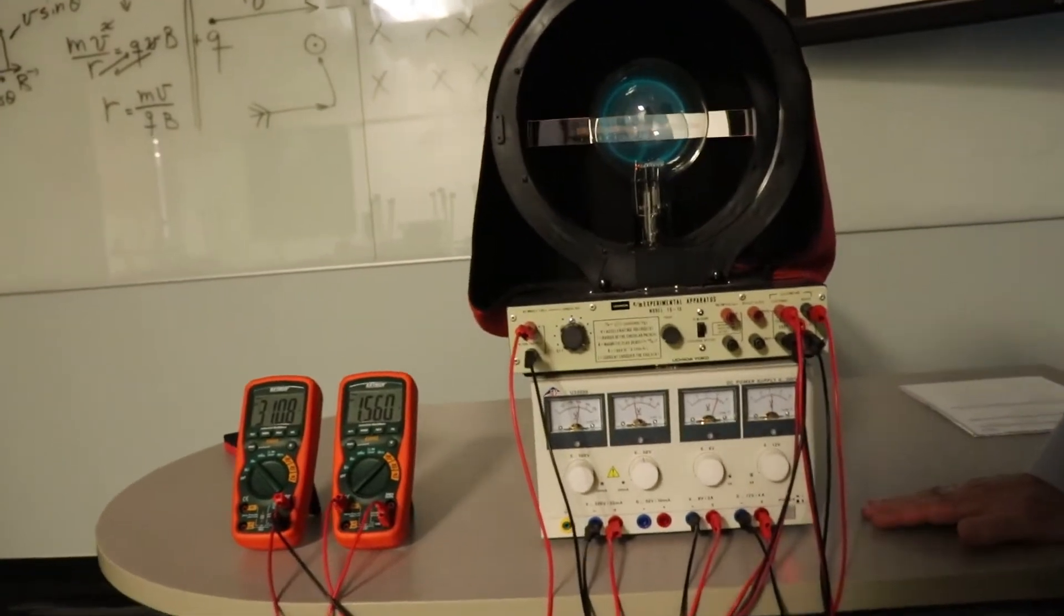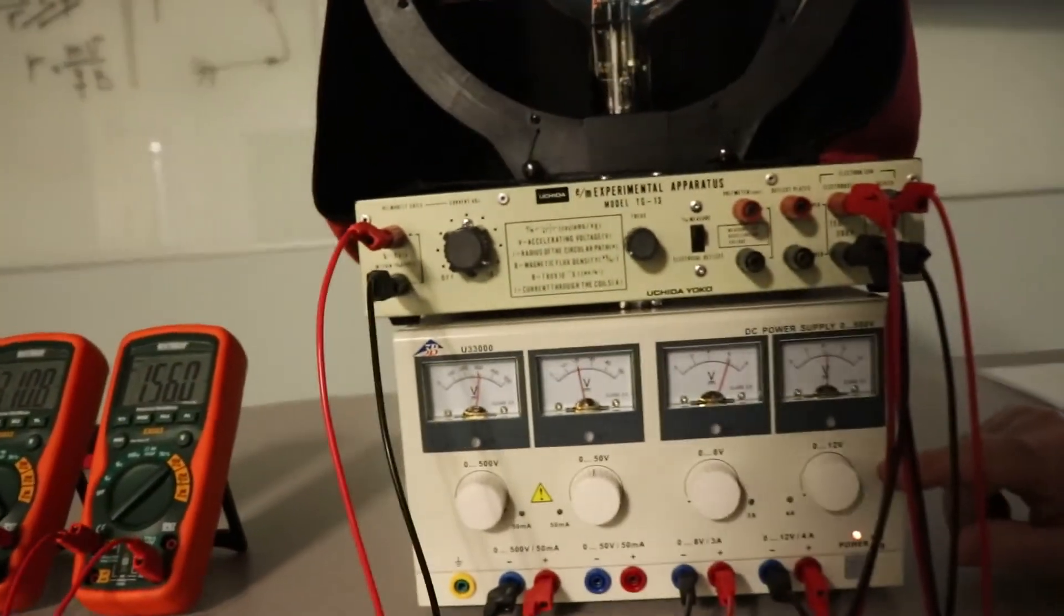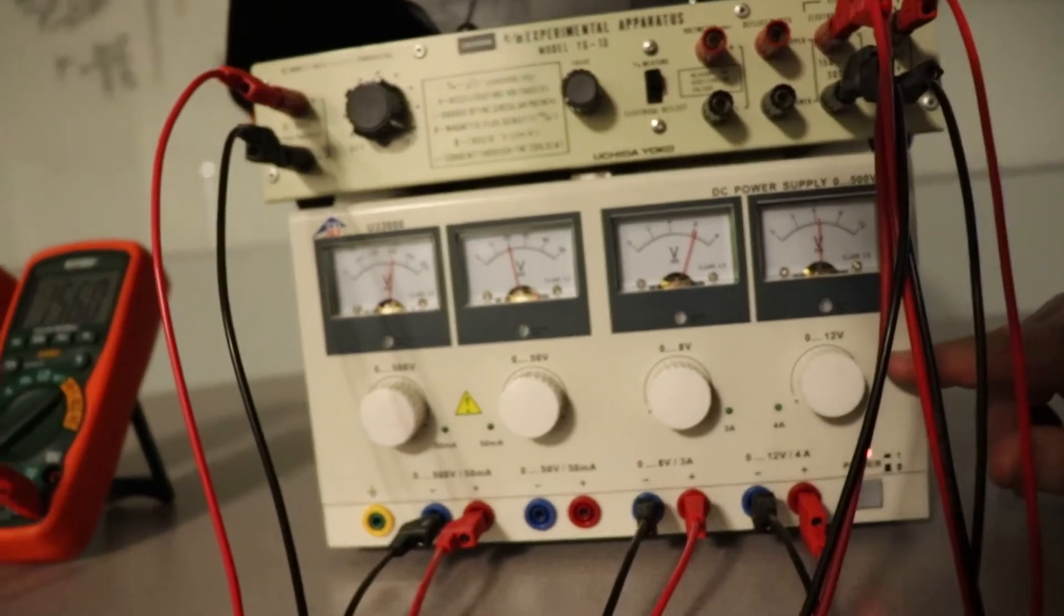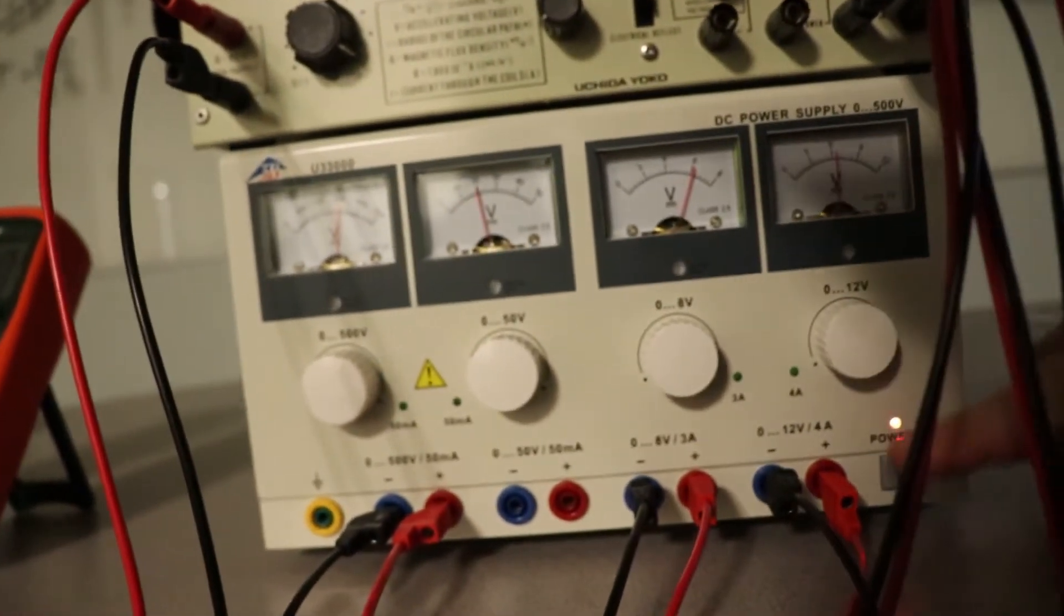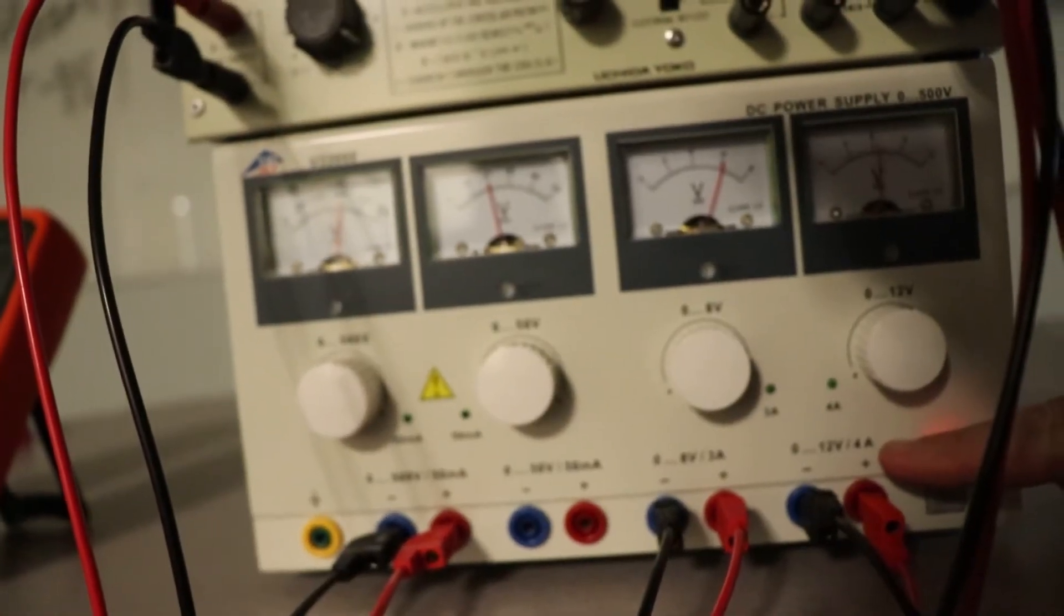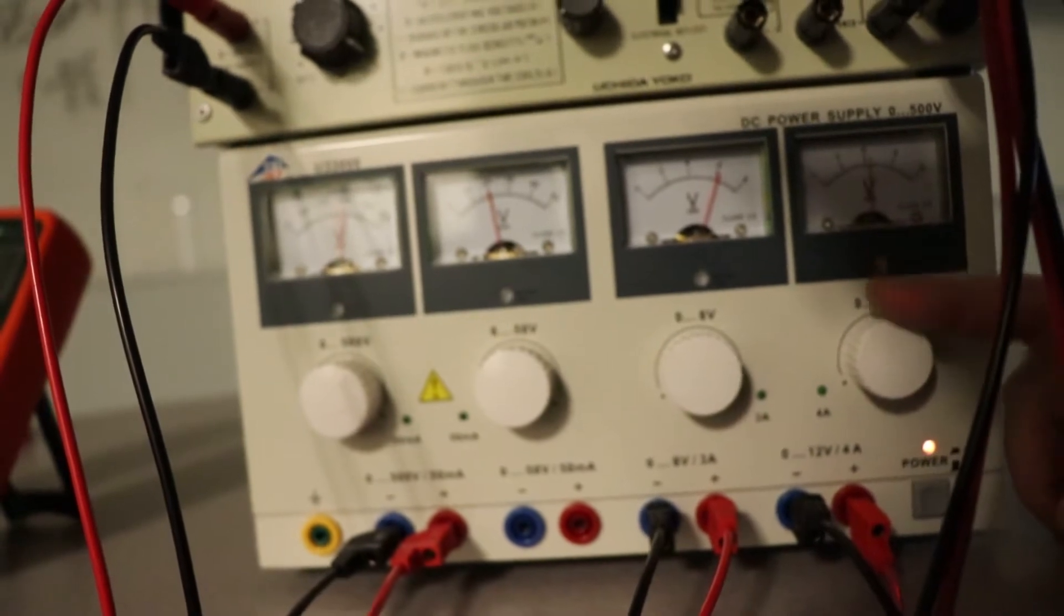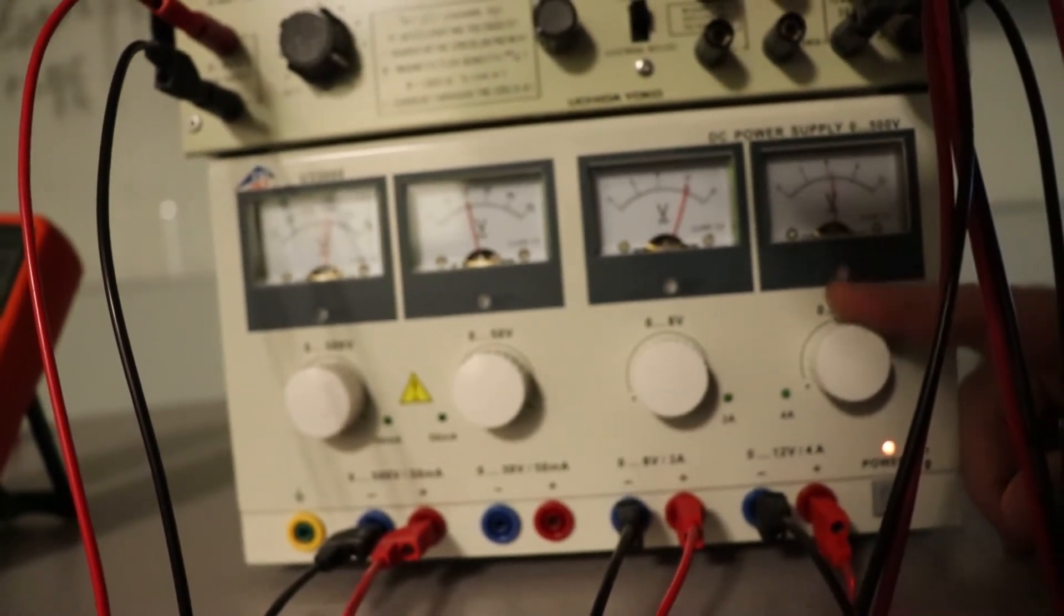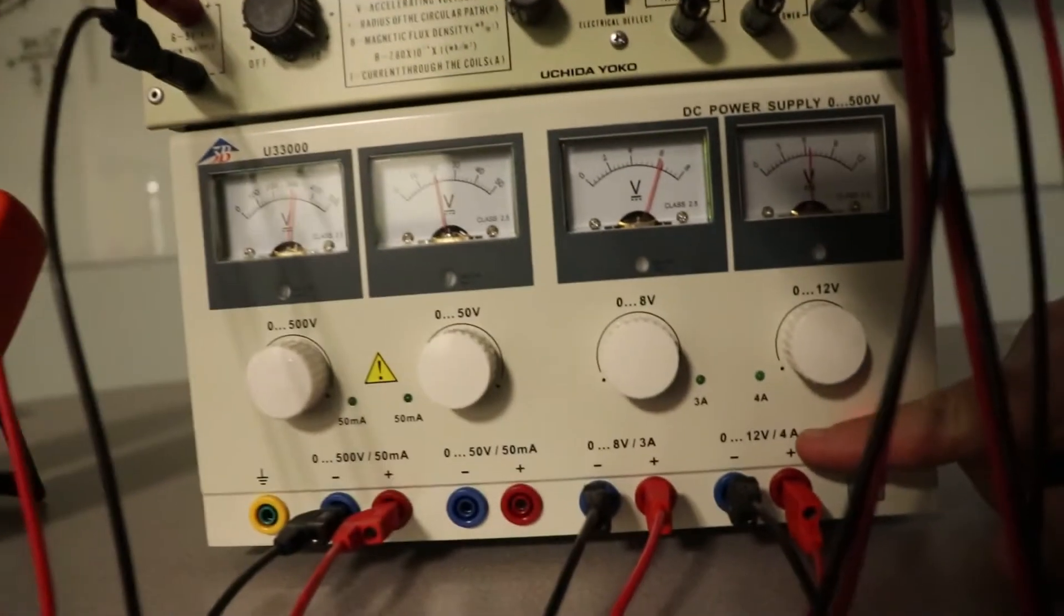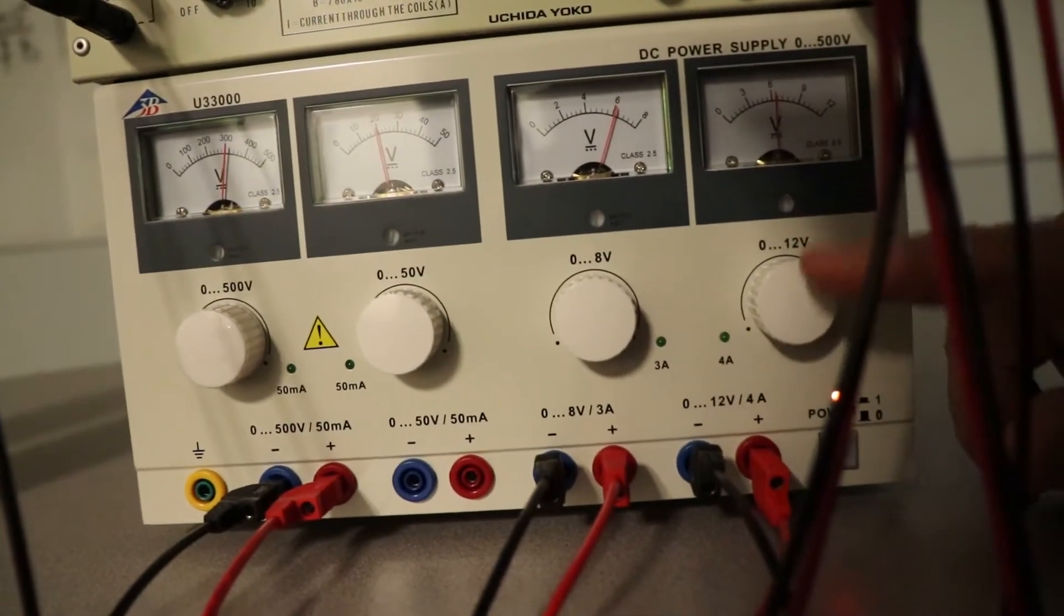This down here is four different power supplies built into one. This is a 12-volt power supply. It puts out four amps. This is going to control the magnetic field, the Helmholtz coil. So as you see, it puts out a lot of current so I can get a lot of B-field.